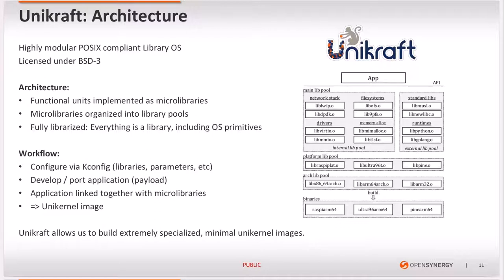The workflow for building an application involves configuring Unikraft using kconfig to select a set of libraries and parameters, and then developing or porting an application that uses these libraries. Everything is linked together into a single binary, which is the resulting unikernel image. Unikraft allows us to build highly specialized and minimal operating system images, and being POSIX-compliant means it is possible to port applications from other operating systems with reasonably small effort.